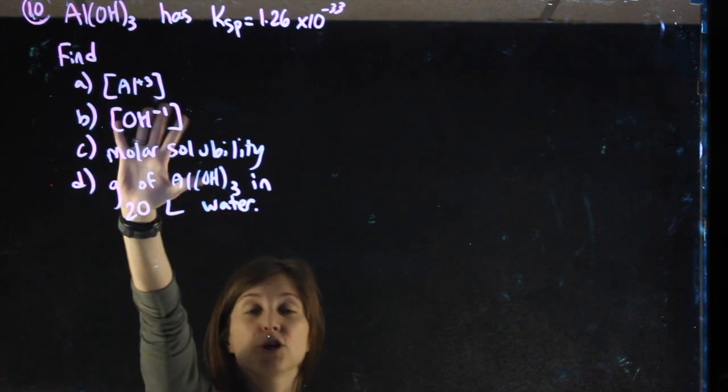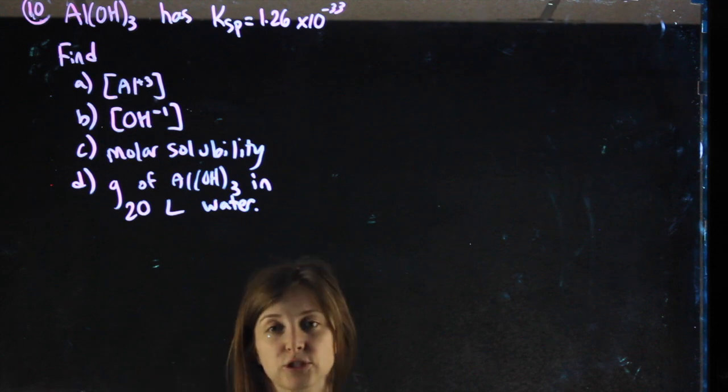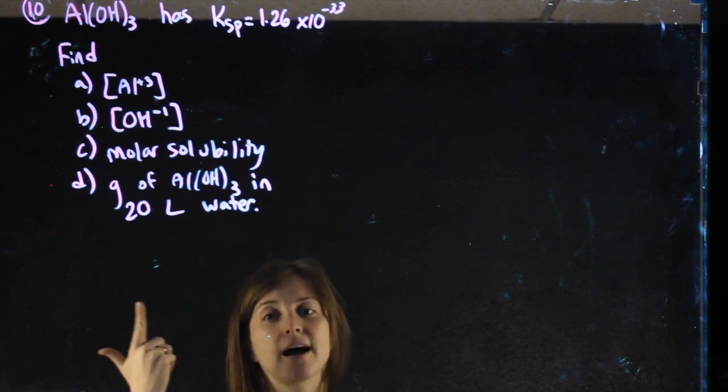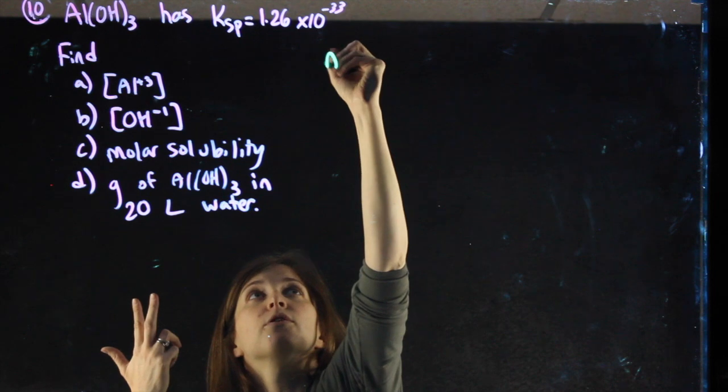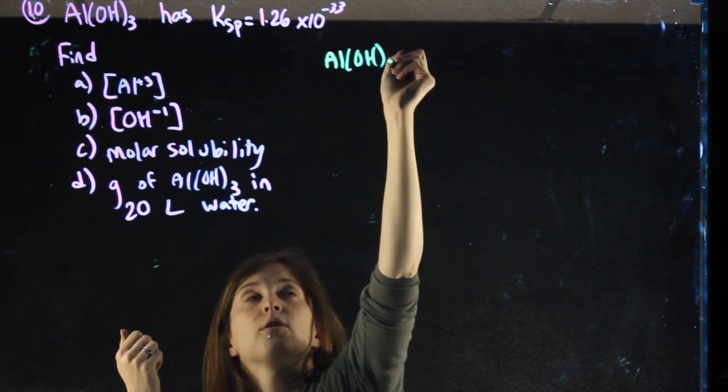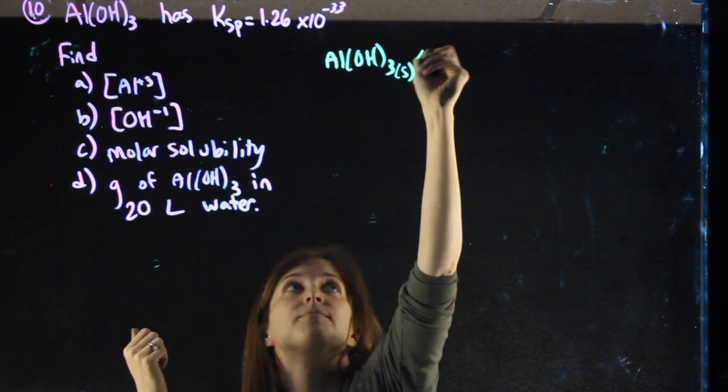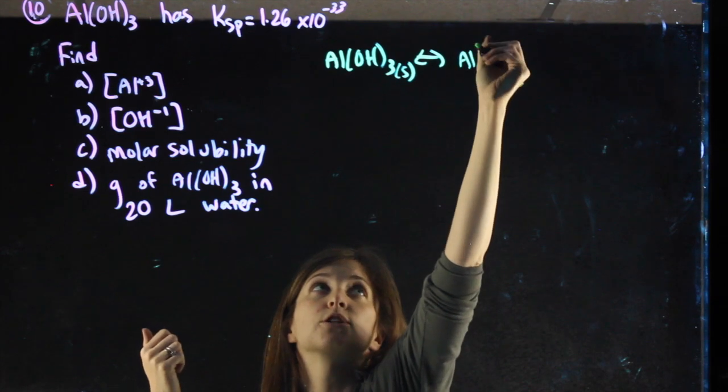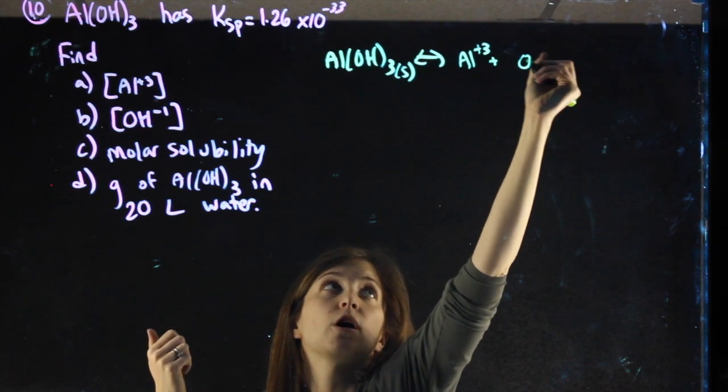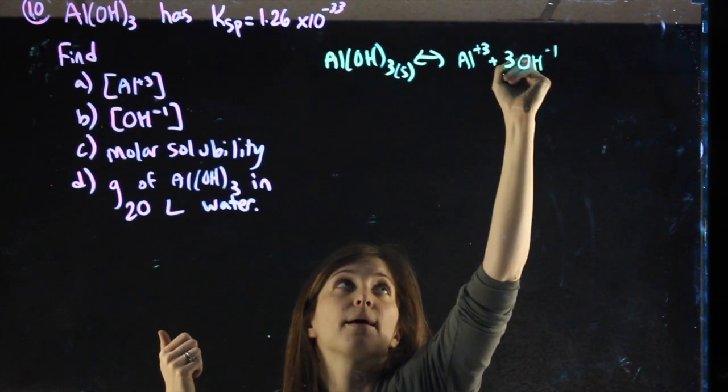Starting off, ignoring the questions, do the things you can always do: dissociate it, ICE chart, KSP. So dissociating aluminum hydroxide, which is our solid, it's going to dissociate into aluminum ions and hydroxide ions. Then I balance it.